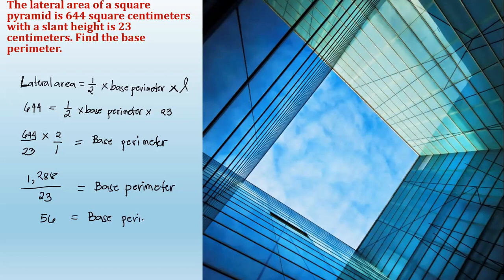56 centimeters is the base perimeter of this square pyramid, having the lateral area of 644 square centimeters and the slant height of 23 centimeters.